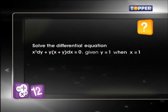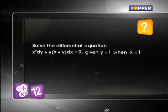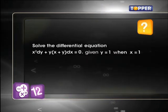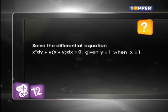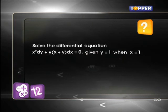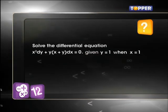In this problem, you are supposed to solve the given differential equation x²dy + y(x+y)dx = 0 when x = 1 and y = 1.